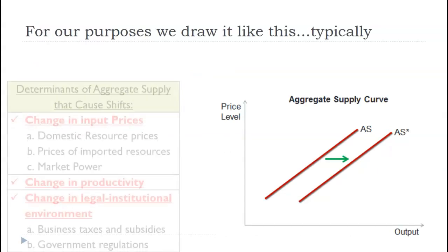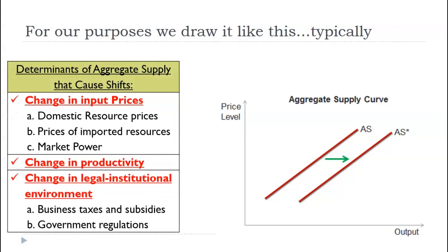What can shift the aggregate supply curve? There are three determinants. First, change in input prices — electricity, labor inputs, those kinds of things. Second, changes in productivity, which is output per unit of input. And third, legal and institutional changes — new legislation that impacts from the government, taxes, subsidies, those kinds of things.